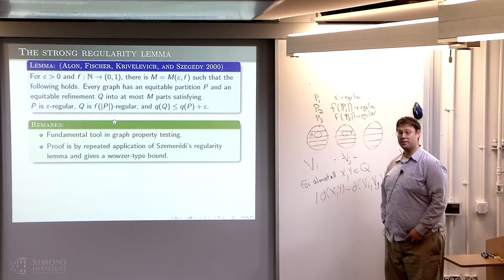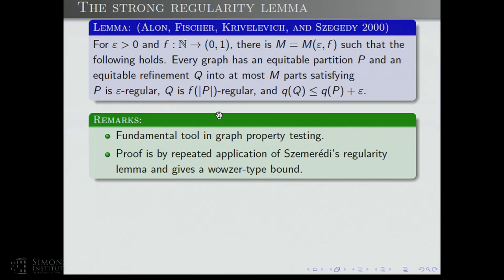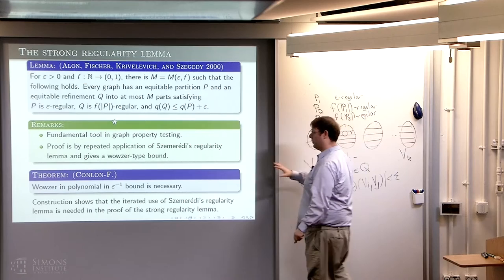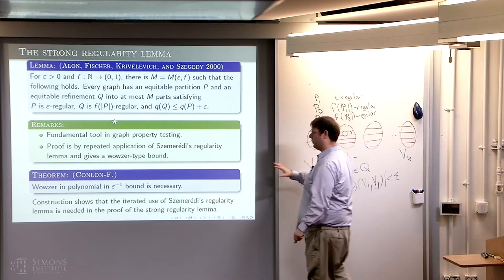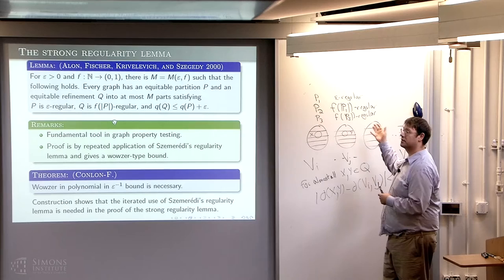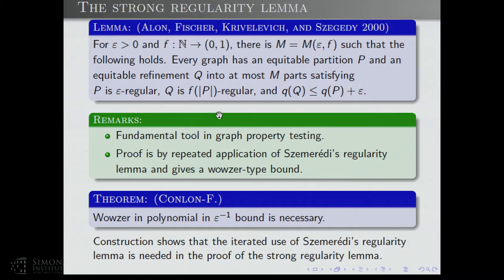Regarding how you get around the epsilon fraction issue — that will be explained shortly via a corollary. This approach using the strong regularity lemma turns out to require Wowser-type bounds. A result of David Conlon and the speaker shows that a Wowser in polynomial in 1/epsilon bound is necessary — a construction was found matching what's done in the proof, showing these horrible bounds are really necessary in the strong regularity lemma.